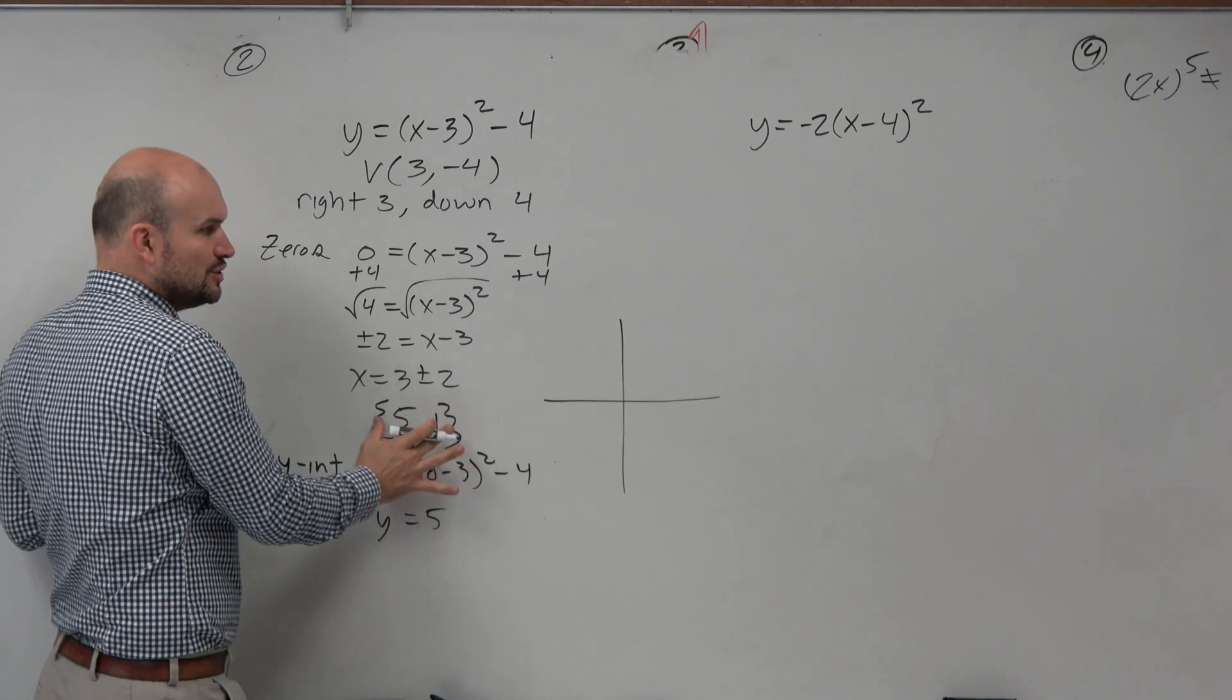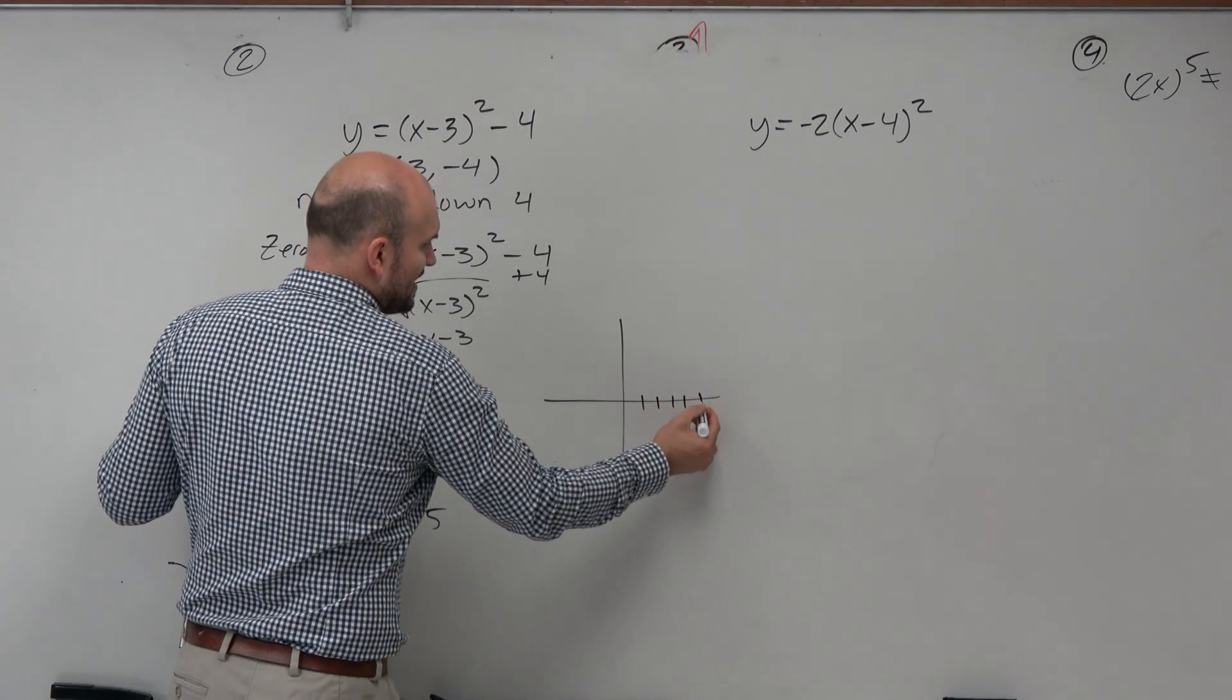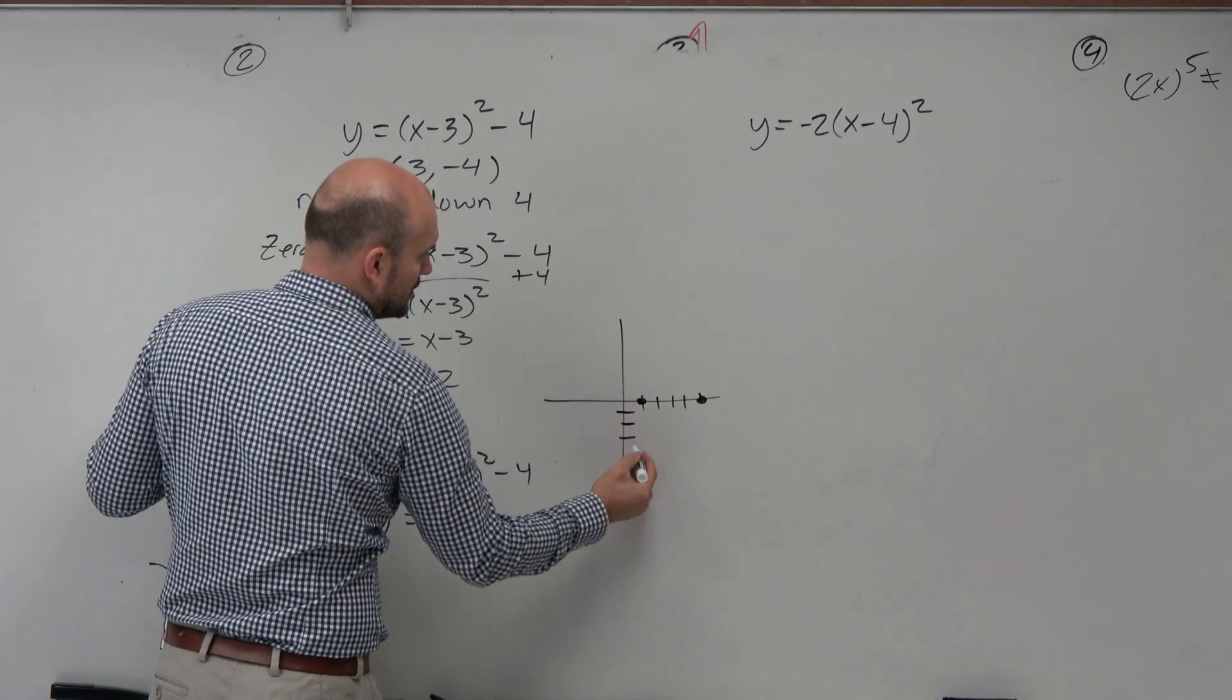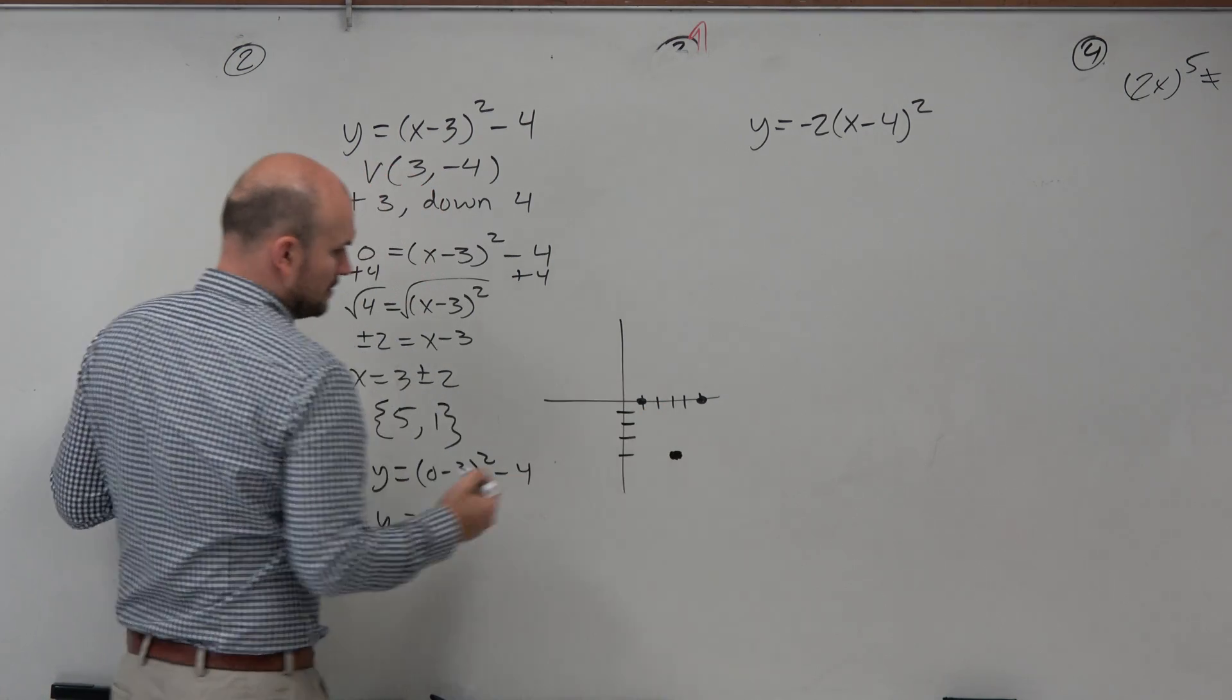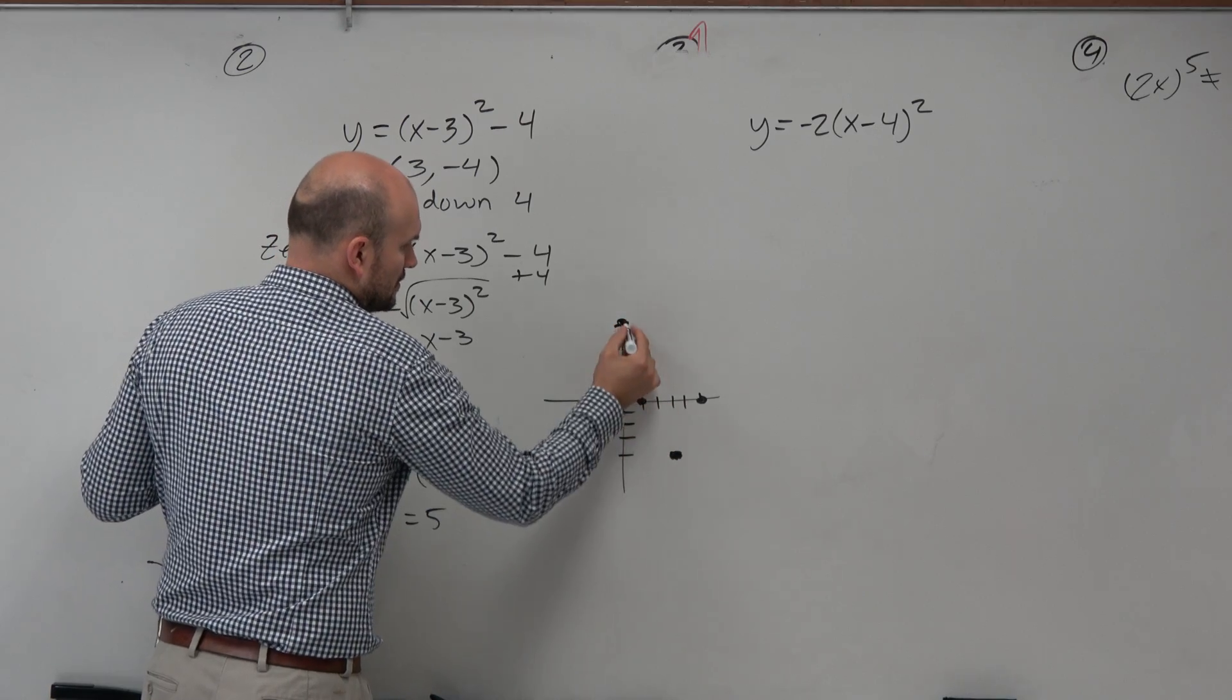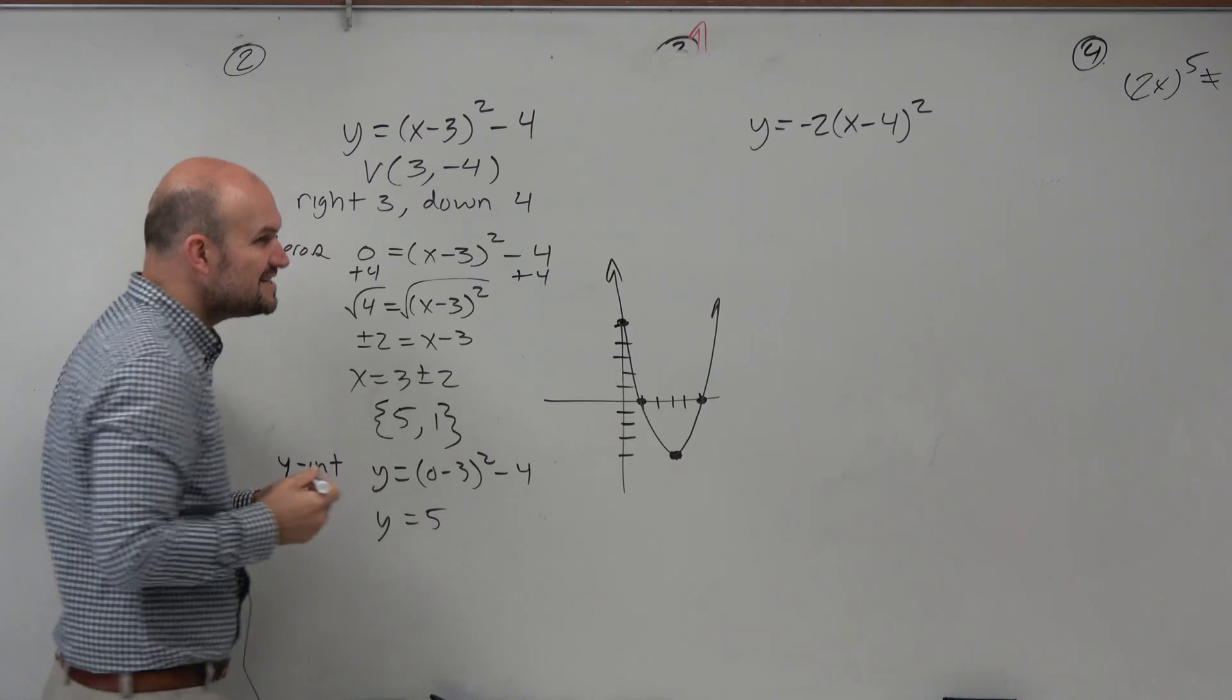But don't get confused by this. If you do what you know how to do, what you've already learned, the zeros are at 1 and 5. The vertex is at (3, -4). The y-intercept is at 5. That's what the graph looks like.